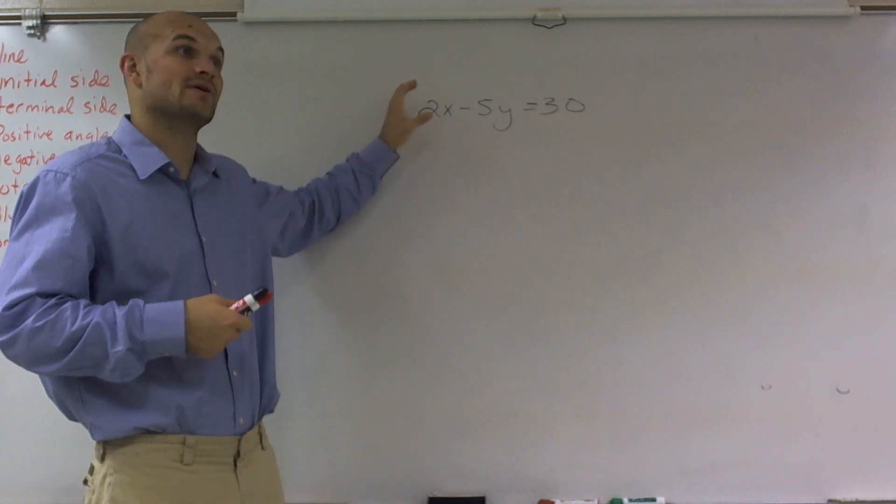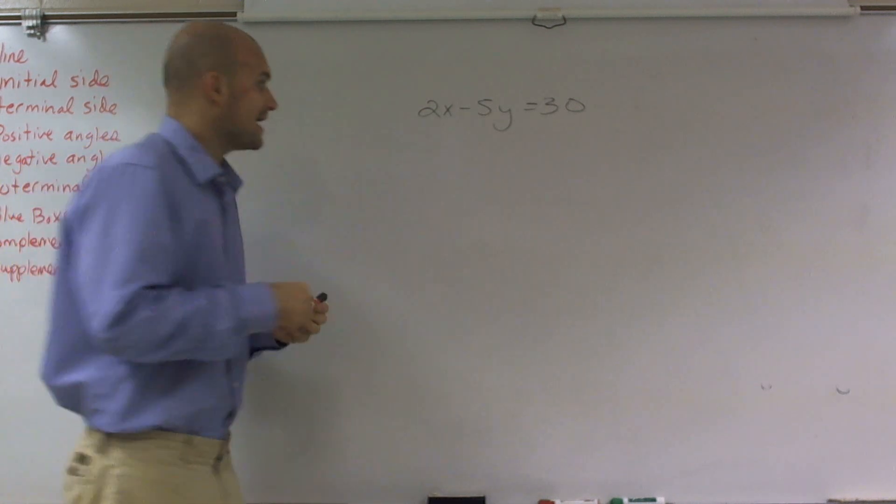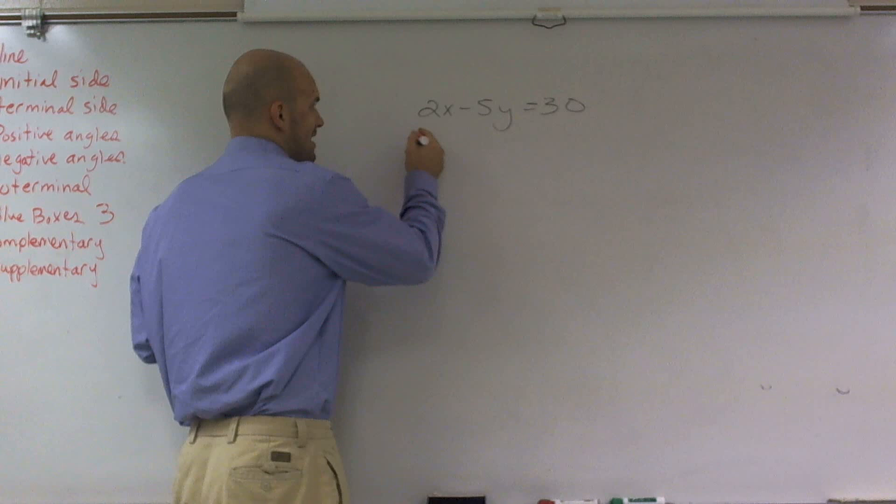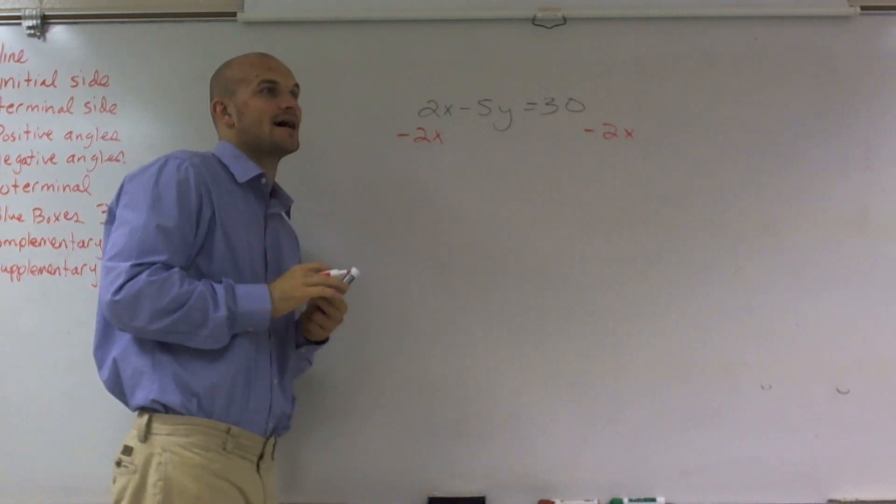I see this as positive 2x, so I need to get rid of the positive 2x. So to get rid of the positive 2x, I need to subtract 2x. And I'm going to subtract 2x on the left and the right side.